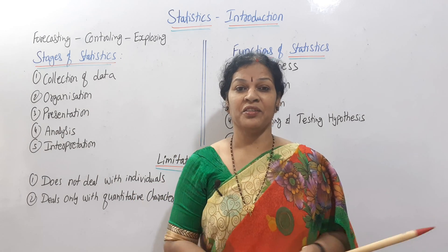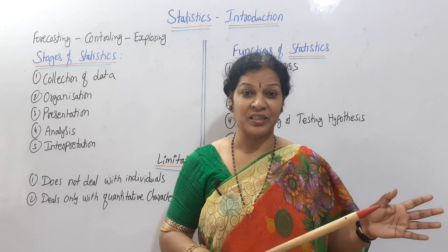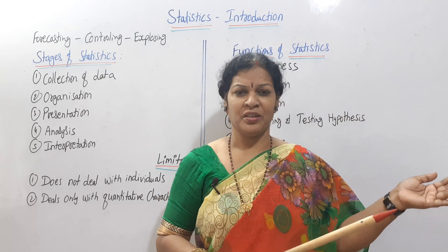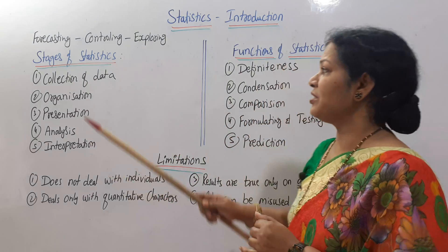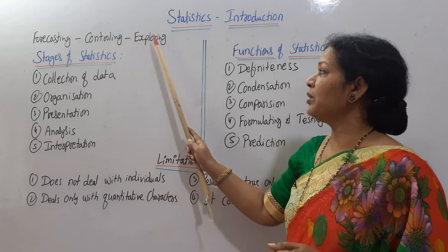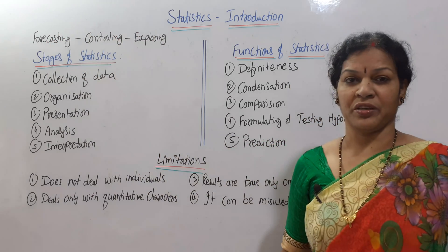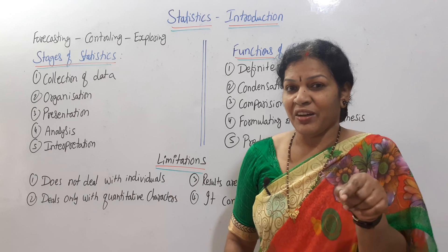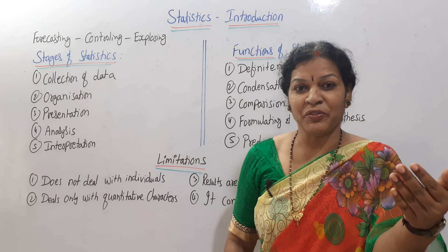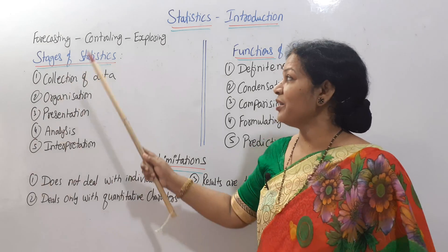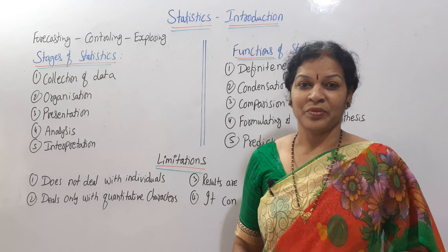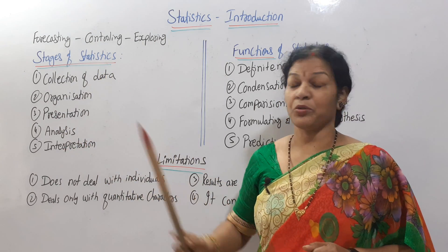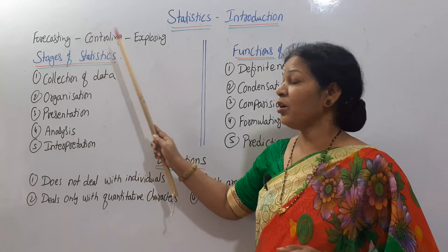There are many uses of statistics. The main objects of statistics are forecasting, controlling, and exploring. Forecasting means predicting what's going to happen in the future. Once you know what's going to happen in the future, controlling becomes easy. Once you control it, automatically it leads to exploring. So these are the main objects of statistics.